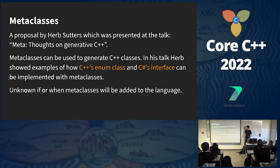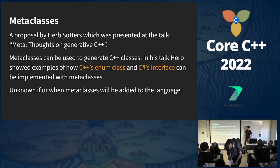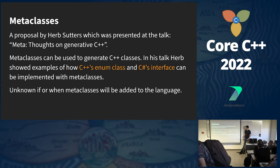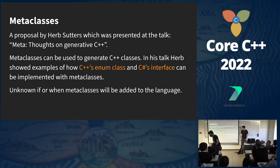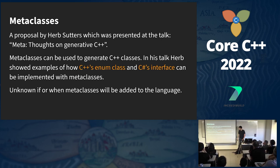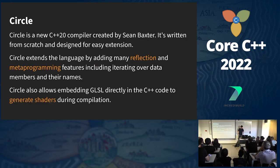Meta classes is a proposal by Herb Sutter, which he presented in his talk 'Meta, Thoughts on Generative C++'. It was one of the inspirations for this project. Meta classes can be used to generate C++ classes, and Herb showed an example of how they can be used to implement C++'s enum class and C#'s interface. But meta classes is still a proposal, so it is unknown if or when it will be part of the language.